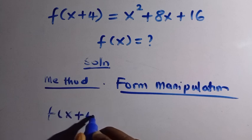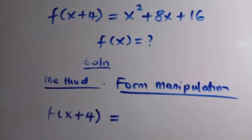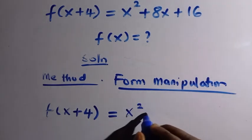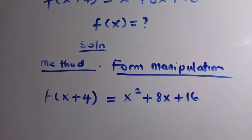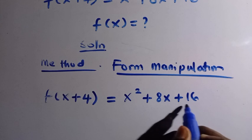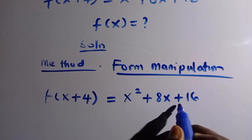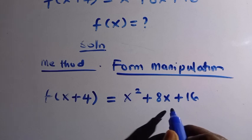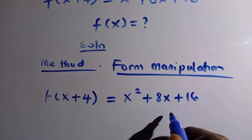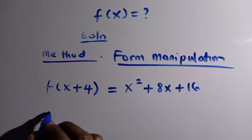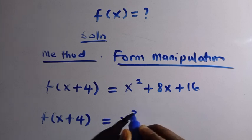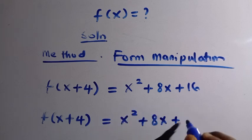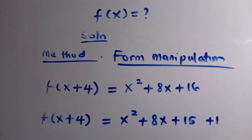We have f of x plus 4 equals x squared plus 8x plus 16. If you look at this very well, x squared plus 8x plus 16 — we cannot factorize this directly. So it's very simple: we rewrite this as x squared plus 8x plus 15 plus 1.